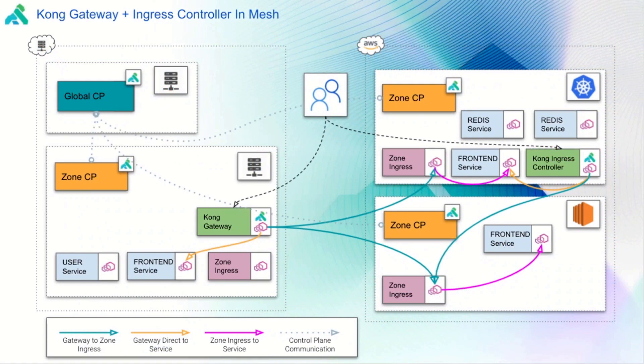When we look at the different components of an environment, we oftentimes see applications that span across data centers or environments. In this example, we have a Kubernetes environment, an EC2 environment, and an on-prem virtual machine-based environment. When we think about the ways that people get into these environments, we can think of things like Kong's gateway or Kong's ingress controller, which is based off of the gateway. These are two entry paths for the environment that users or services are going to consume to hit the systems behind that environment.